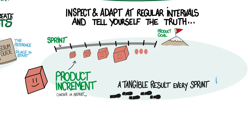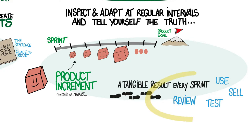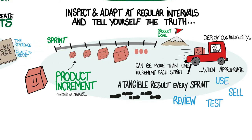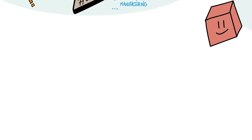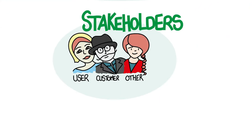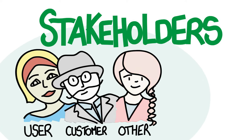Each sprint produces a tangible result that supports the overall goal — something you can use, something you could sell, something you can test in real life, and most importantly something the scrum team can review together with its stakeholders. The idea is to produce tangible results every sprint. You can produce increments more often, even deploy them continuously, if that makes sense and if your team has the technical excellence to do so.